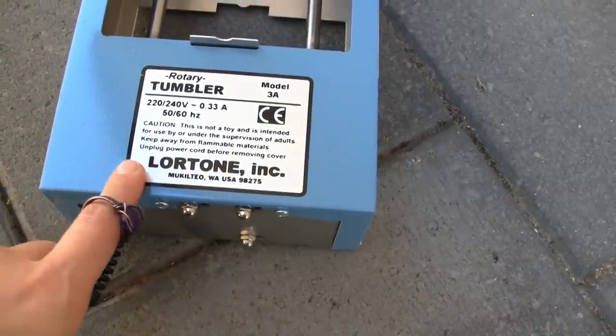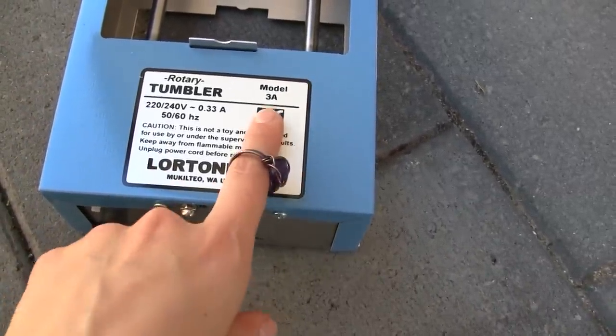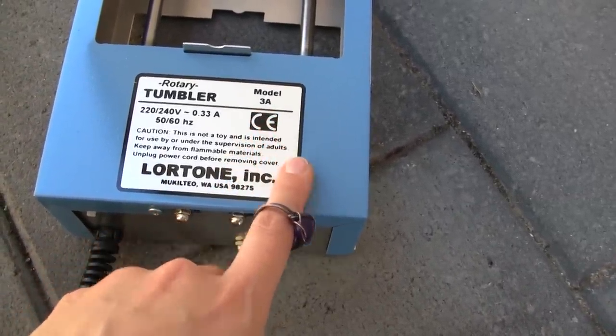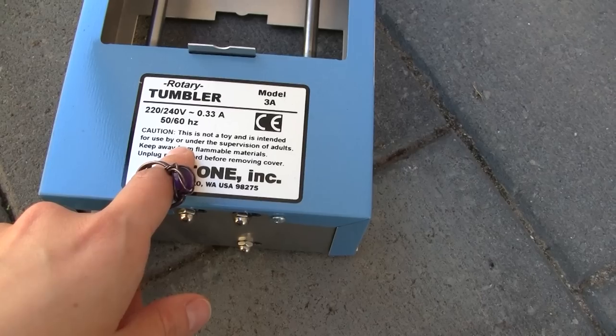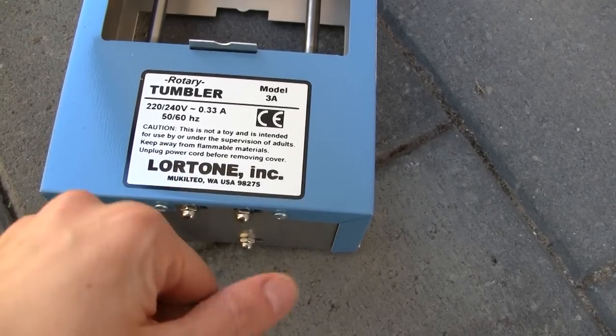So this is a tumbler I have, it's the Latrone 3A. I purchased it online in a little kit and I'll show you the other items I got which is the steel shot and the burnishing powder.